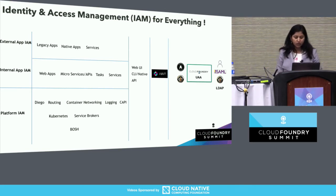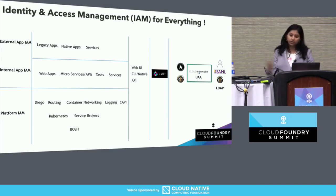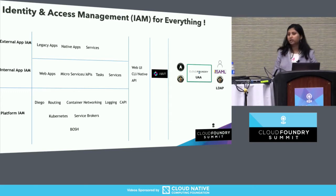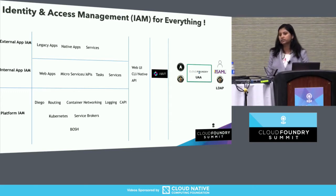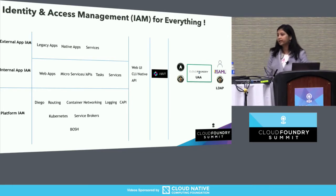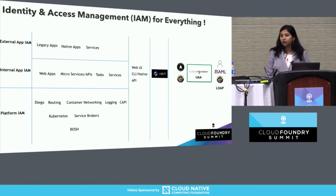At the lowest level, you have Bosh, which is the infrastructure orchestration layer. It helps Cloud Foundry be multi-cloud. We have to think about when operators come into Bosh, what is the security experience we want — making sure that whoever is coming in is proving their identity and is only able to do things that they are allowed to do.